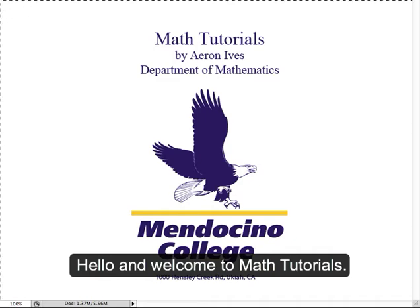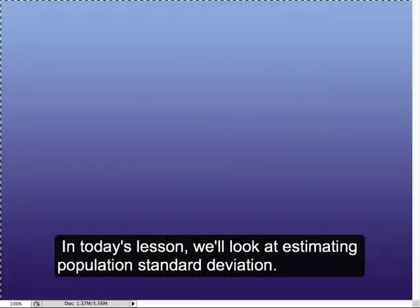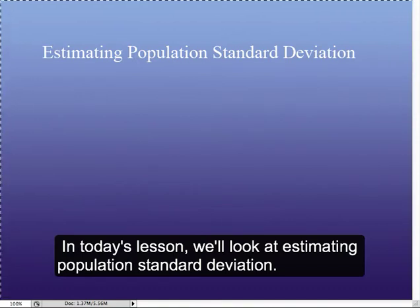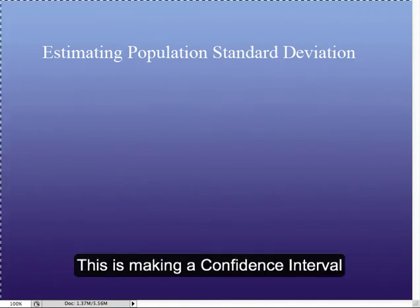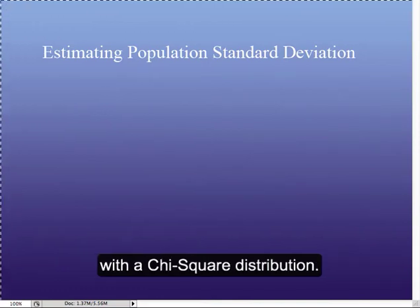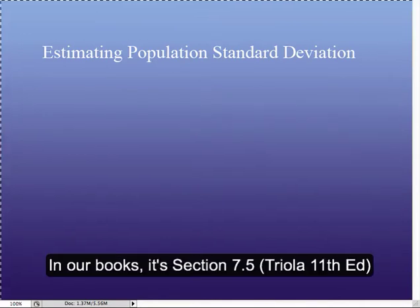Hello, and welcome to Math Tutorials. In today's lesson, we're going to take a look at Estimating Population Standard Deviation. This is basically making a confidence interval with a chi-squared distribution, and in our books, it's section 7.5.